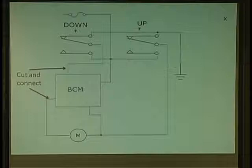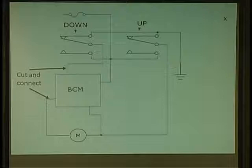Very simple. Cut those two wires off the BCM and connect them together. Take them off the BCM, just connect them together. You'll have up, down, just not automatic.